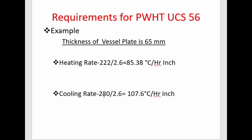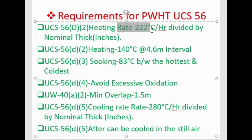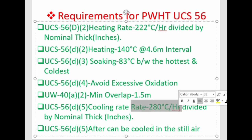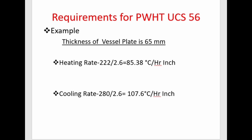Here is a sample example to find the heating rate and cooling rate. For a vessel with a plate thickness of 65 mm, which is equivalent to 2.6 inches: the heating rate shall be 222 ÷ 2.6 = 85.38°C per hour, and the cooling rate shall be 280 ÷ 2.6 = 107.6°C per hour, using the formulas from UCS-56 D2 and D5.